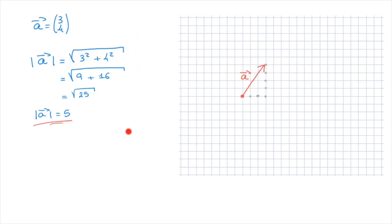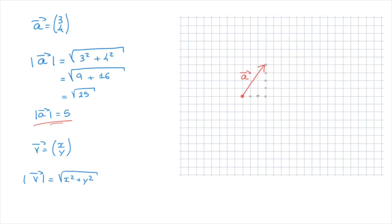Now, the good news is the method we've just used for finding the magnitude will always work. We can generalize this with a formula. Given a vector v with components x and y, we can calculate its magnitude as follows: the magnitude of v is equal to the square root of x squared plus y squared. If you hadn't seen that formula before, do make a note of it now — this is the formula for calculating the magnitude of a vector.